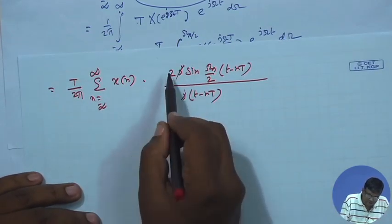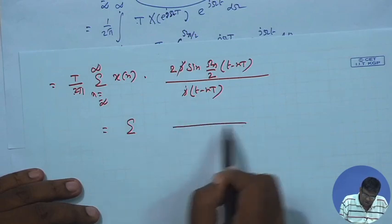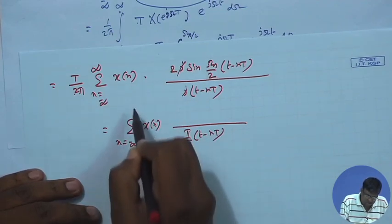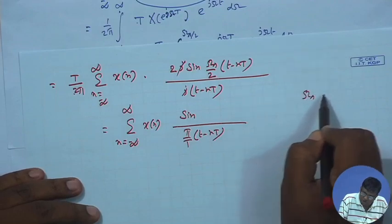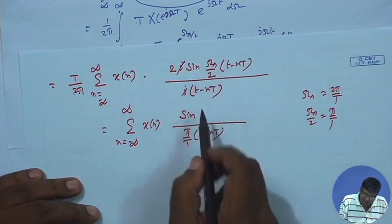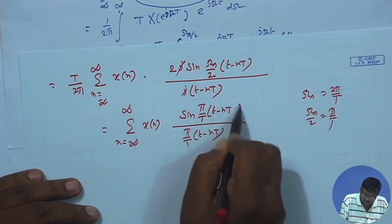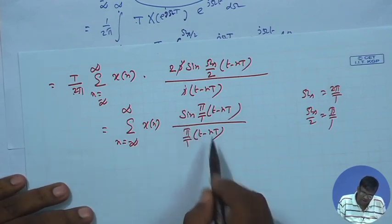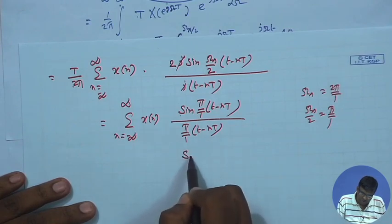Since Omega_s = 2π/T, we have Omega_s/2 = π/T. Substituting, the result becomes a sinc function: sin(π(t-nT)/T) divided by π(t-nT)/T. This is a delayed sinc function — sin(x)/x form. Combining everything, we get that x_a(t) equals the summation over n of x[n] times this sinc function.